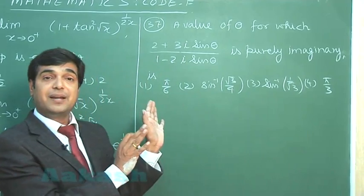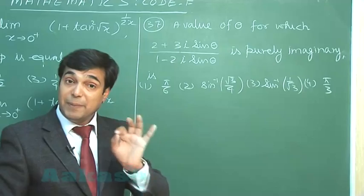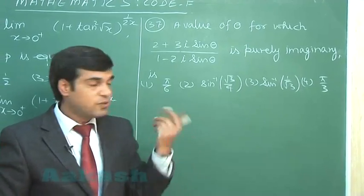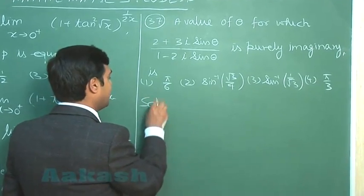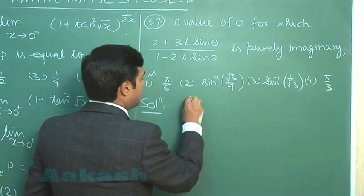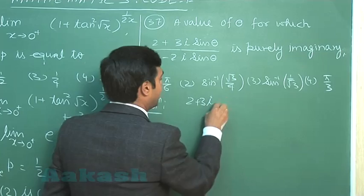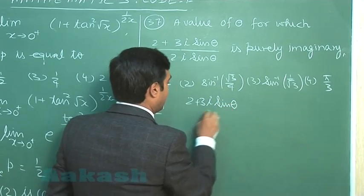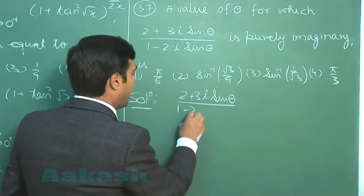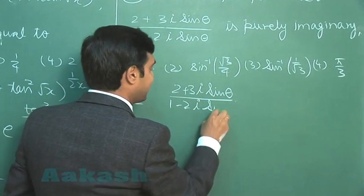So this complex number is purely imaginary, meaning the real part is 0. So what is 0? Simply we can solve it as (2 + 3i sin θ) divided by (1 - 2i sin θ).